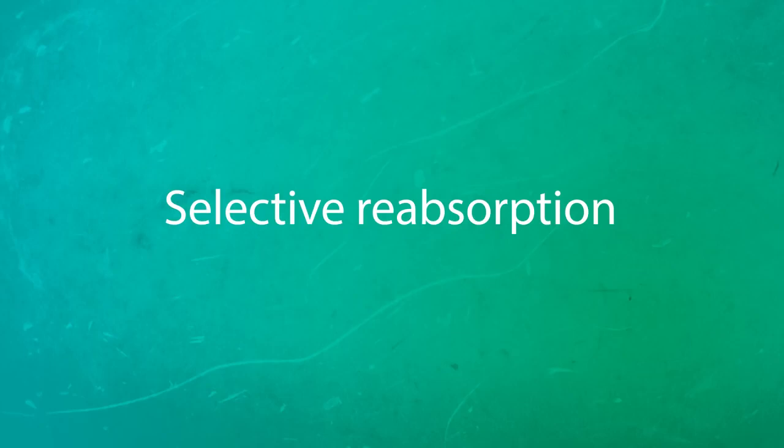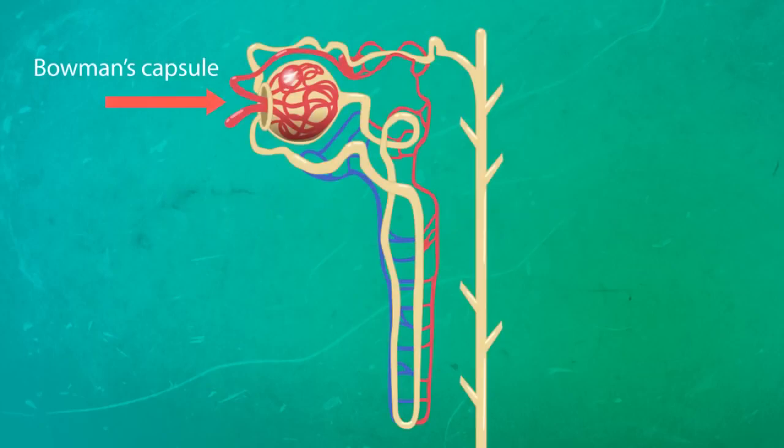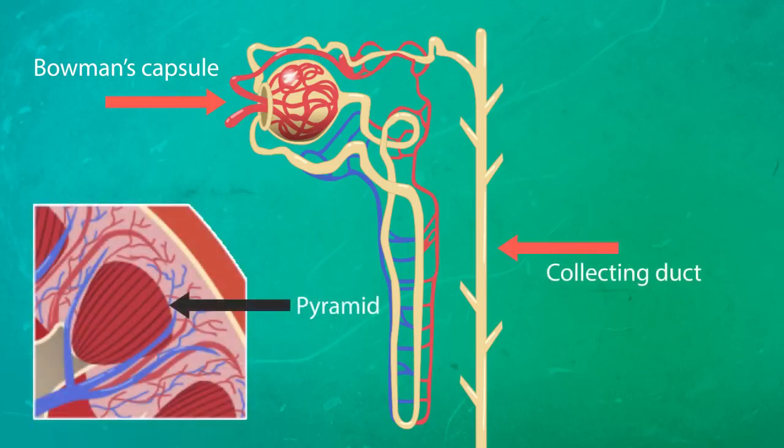However, the blood does not want the urea so it carries on moving through the nephron and eventually reaches the collecting duct. The collecting duct takes waste down the area of the kidney called the pyramid where it collects all the waste from all the nephrons.